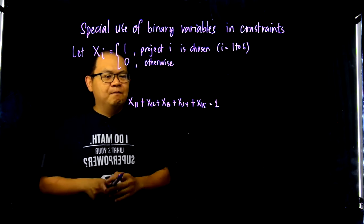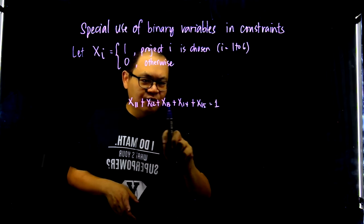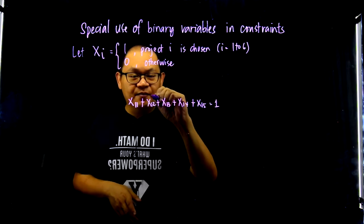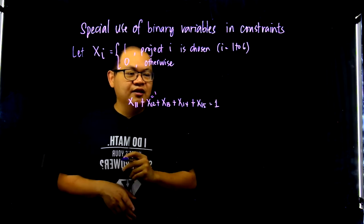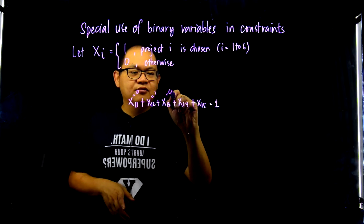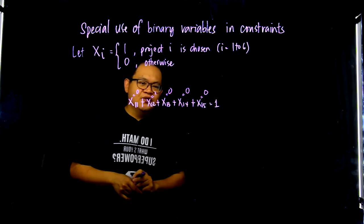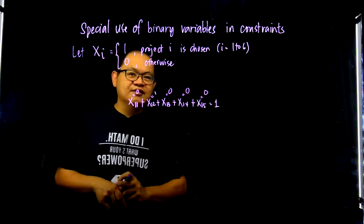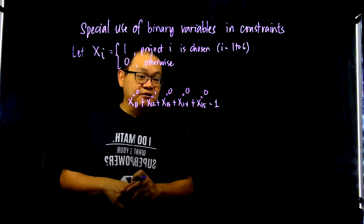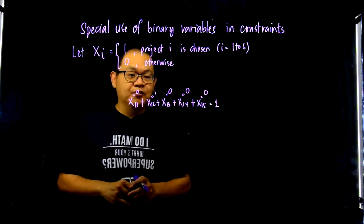So how does the dynamic work? Because the variables are 1 or 0, and you're adding all 5 variables and equating them to 1. Then if, for example, x12 is equal to 1, then this constraint tells us that the rest have to be equal to 0. So this is an example of how we use binary variables in constraints to represent certain realities in the problem.